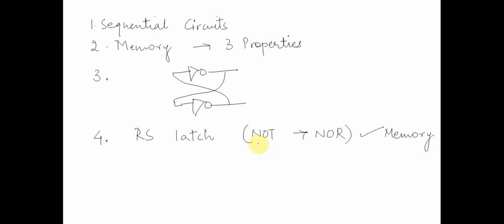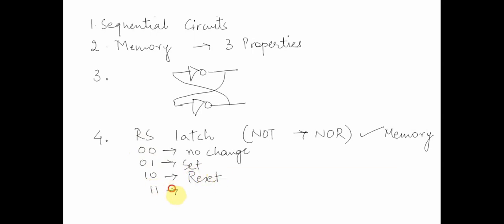In this particular case, we saw this as an example of memory and said there are particular cases: 00 is a no-change state, 01 we were able to set the circuit, 10 — with R=1 and S=0 — we were able to reset the circuit, and 11 was an evil combination which should be avoided under all circumstances because it could lead to unstable oscillating output. Once we did this, we looked at a state table and characteristic table as well.